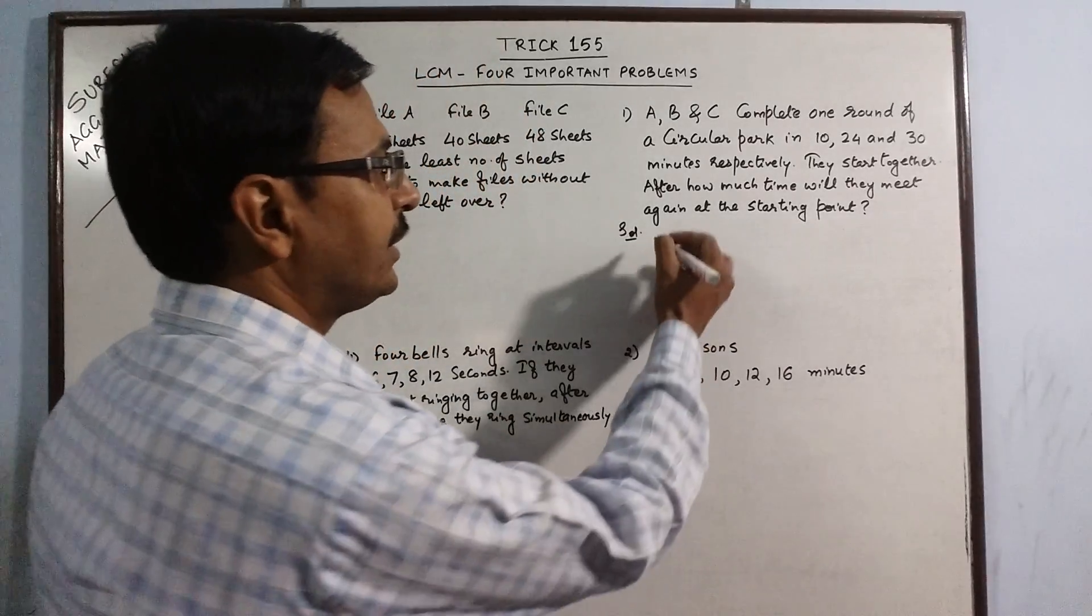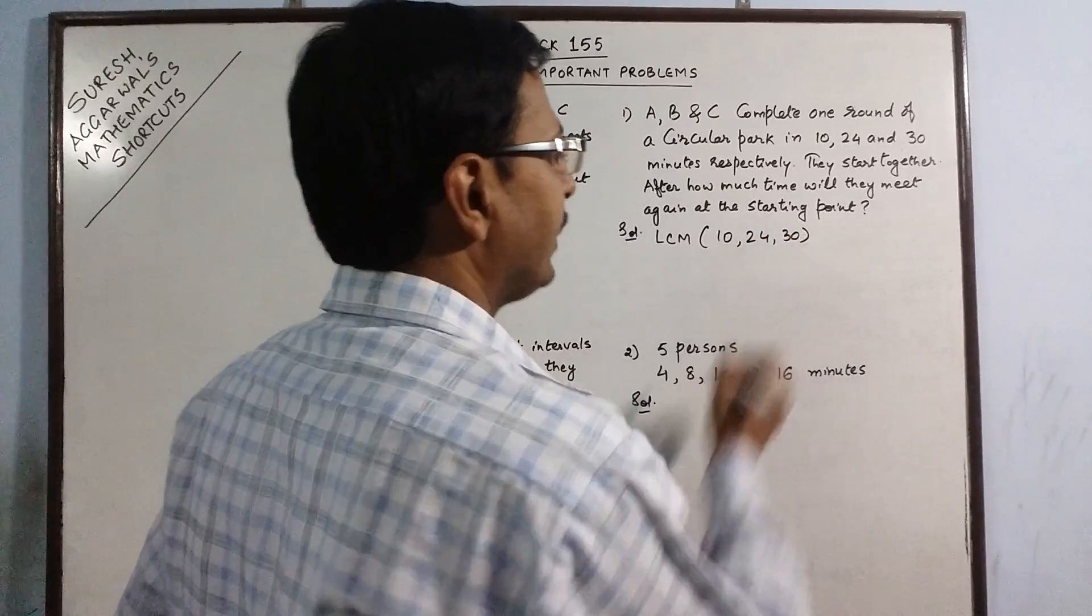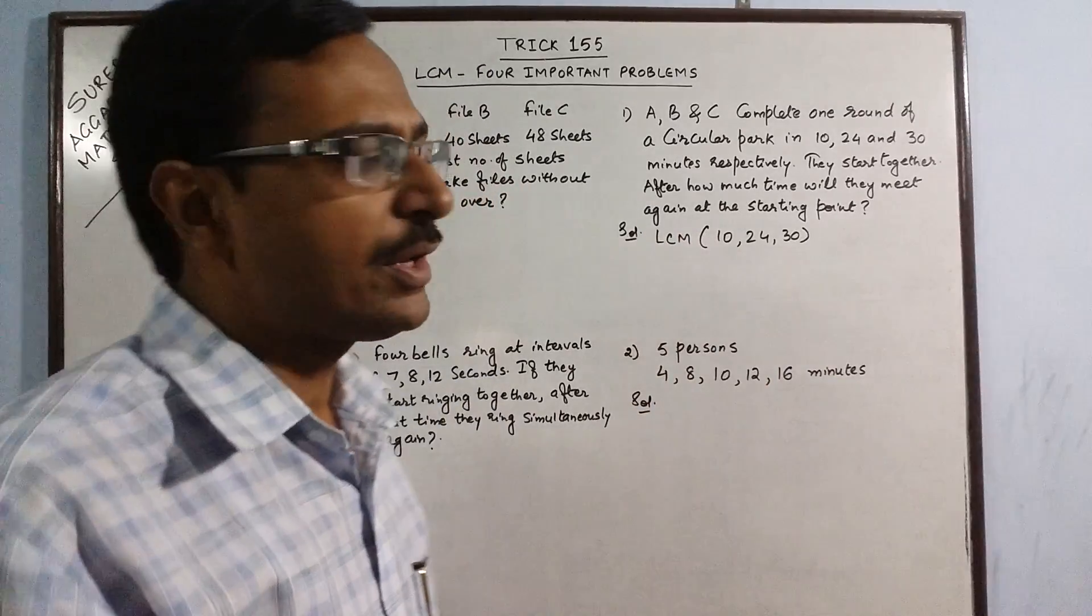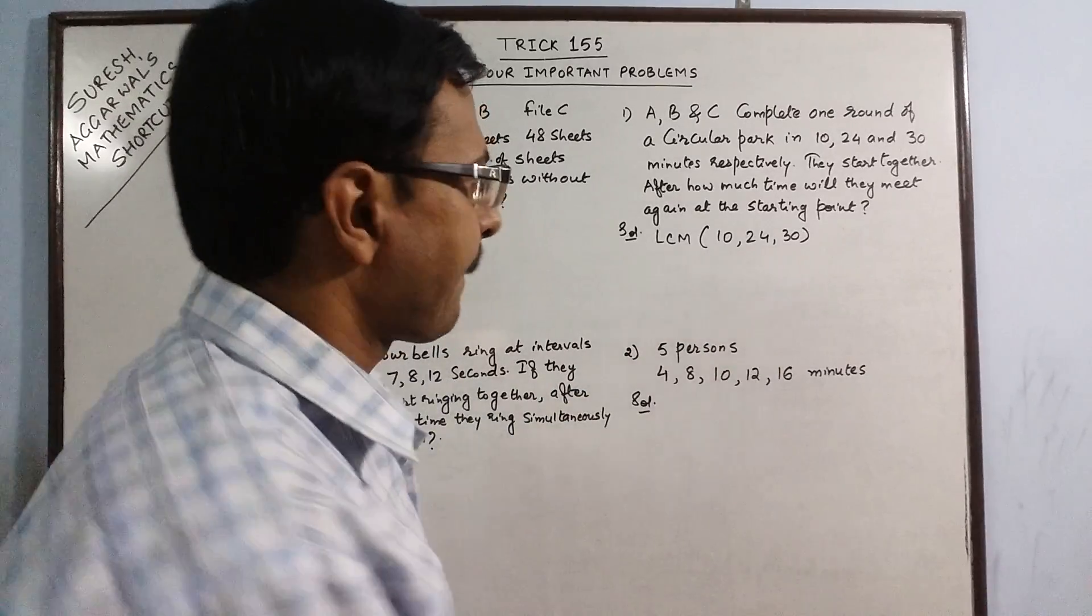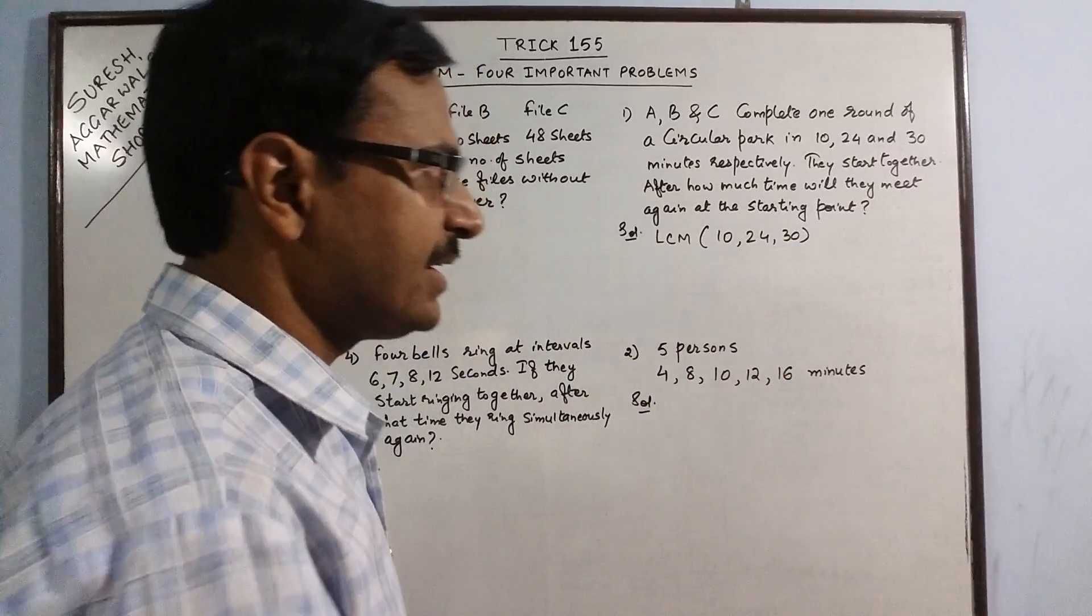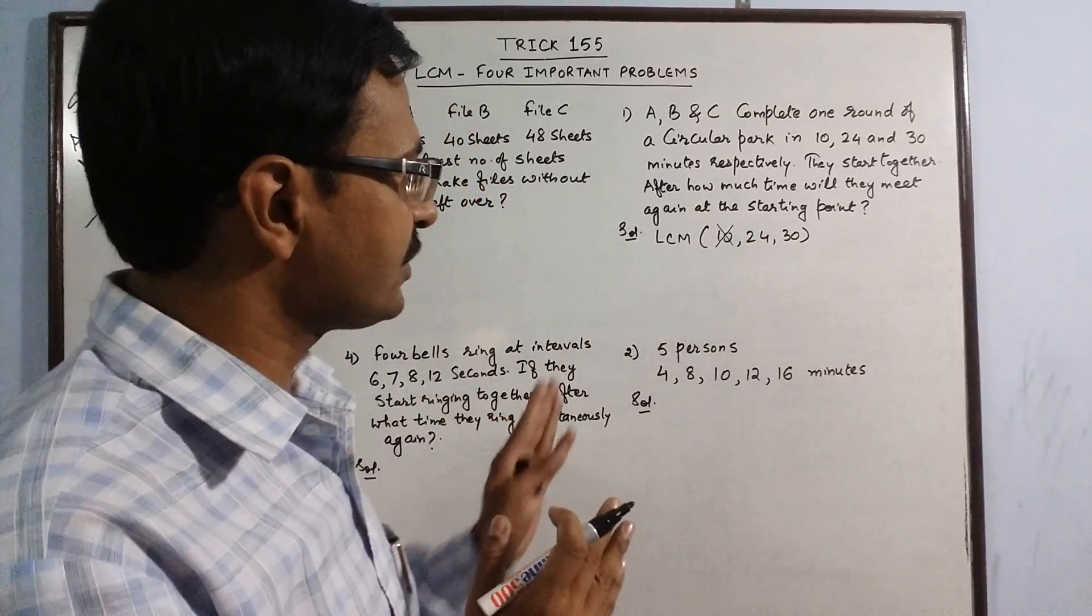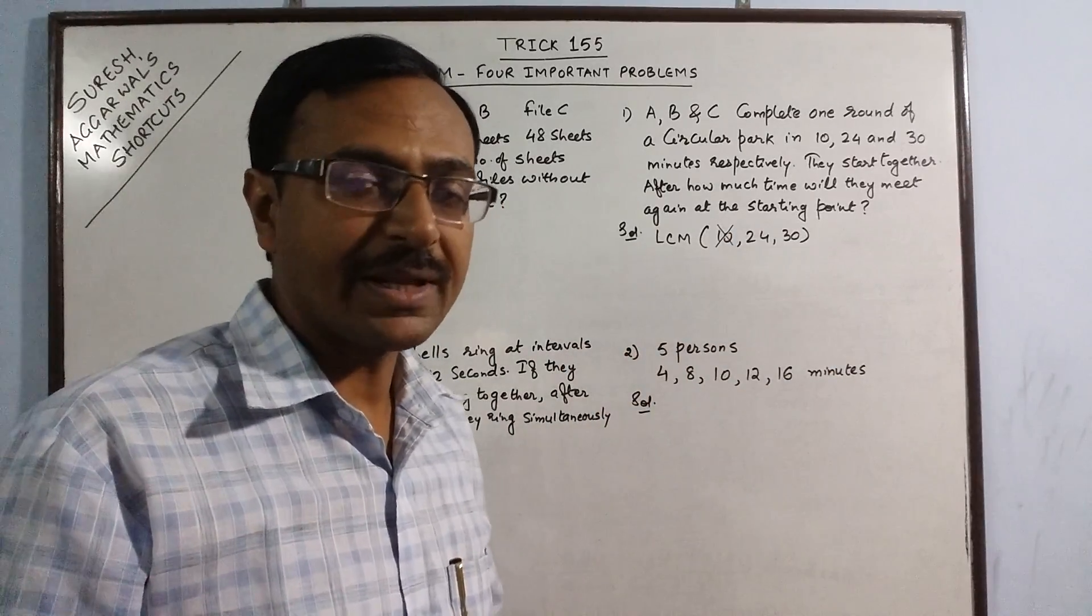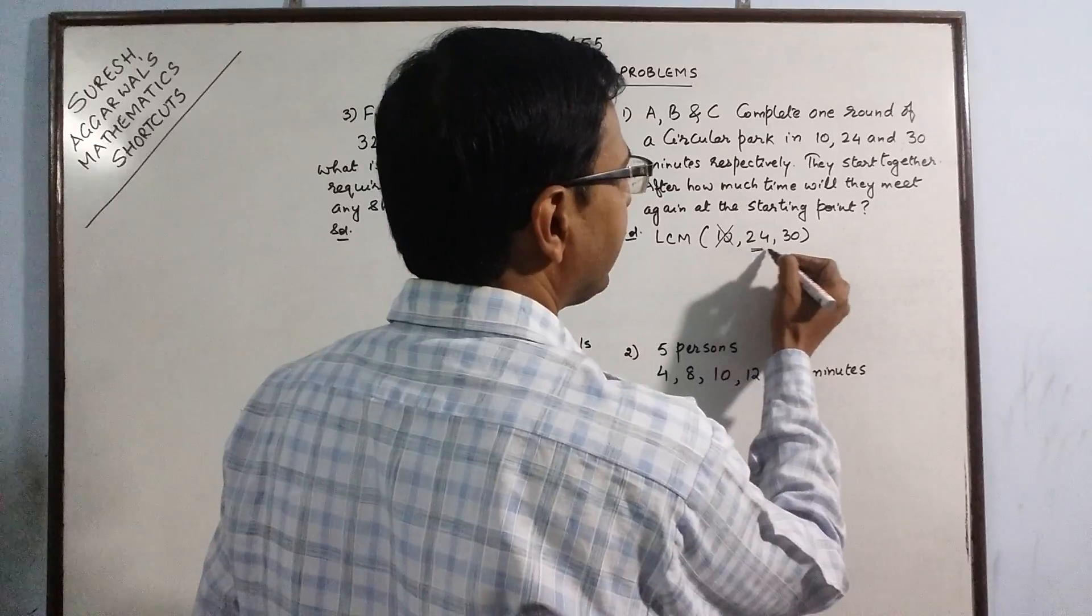Here we need to find the LCM of 10, 24, and 30. Now that LCM will give us the final answer of our problem. Just observe these three numbers: 10 is a factor of 30, it divides 30 exactly. So we do not need to consider 10. Whenever there is a number which divides the other number exactly, just strike off that number. We do not want to consider that number for finding the LCM. Now 24 and 30 are left behind.